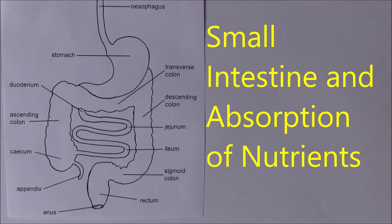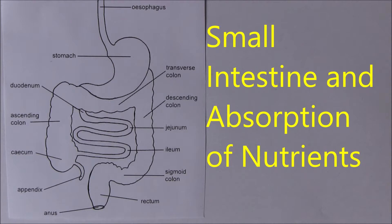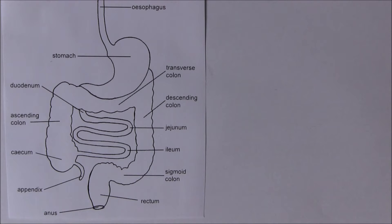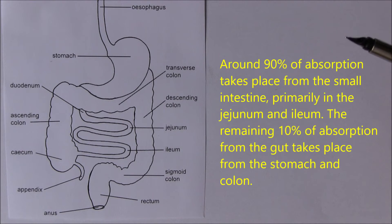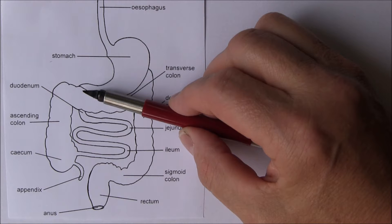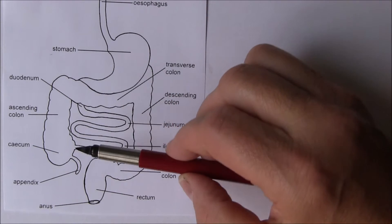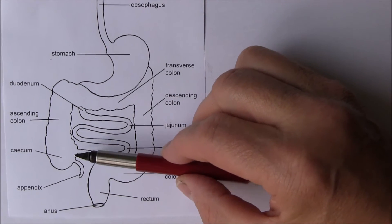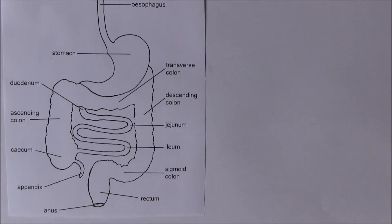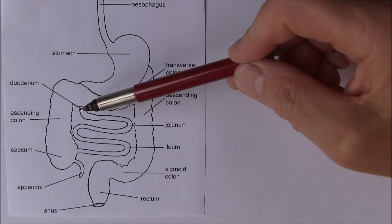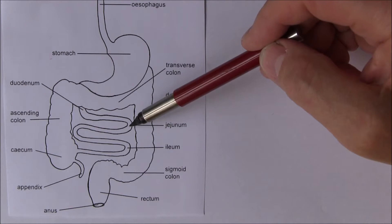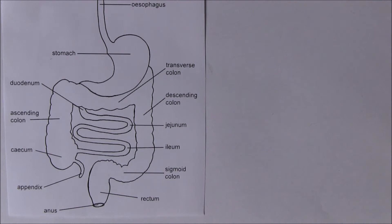In this video we want to think about the process of absorption, and the point of anatomy of particular interest is the small intestine. Here's the overall diagram of the gastrointestinal tract. The small intestine stretches from the pyloric sphincter at the end of the stomach all the way to the ileocecal valve where the ileum joins the cecum. The small intestine has three components: the duodenum, the jejunum, and the ileum.